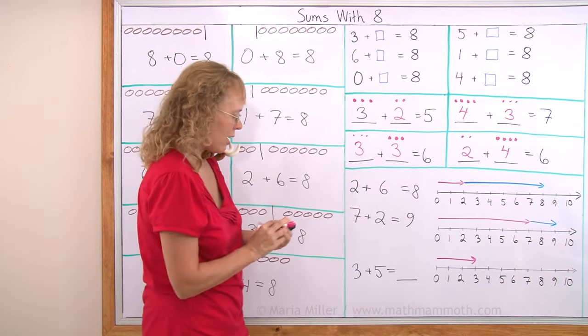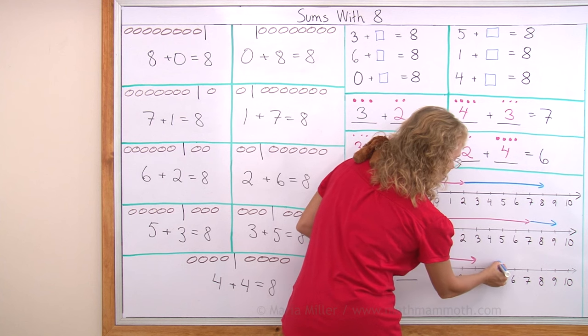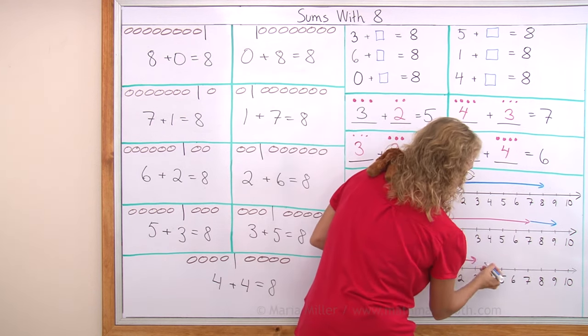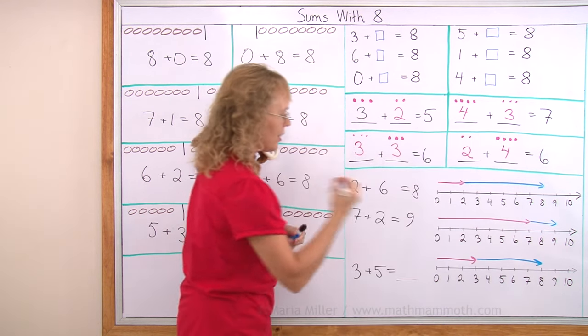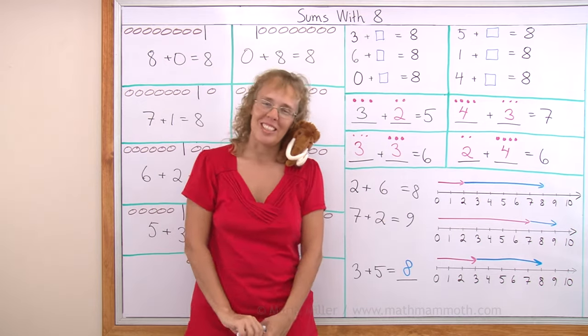My second arrow needs to be 5 units long. So I start here and I go 1, 2, 3, 4, 5. Okay. Until 8. Right. And the answer is 8. And we're all done with this lesson.